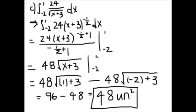Part C is the integral from negative 2 to 1 of 24 over the square root of x plus 3 dx. You can change this into 24 times x plus 3 to the negative 1 half.